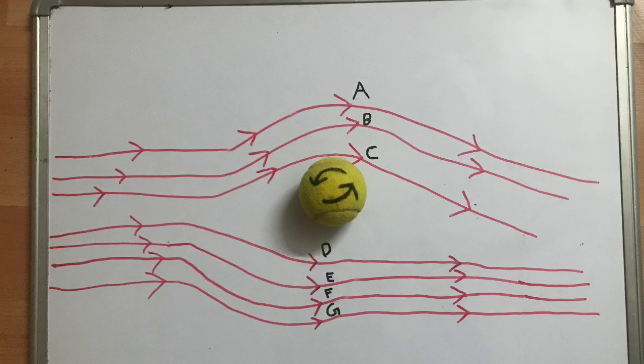Now, let's go back to topspin, where the ball spins in an anti-clockwise direction. In this case, the direction of the airflow is opposite to that of the motion of the ball. However, the direction of the air flowing at D, E and F and the direction of the spin experienced by the ball are the same.